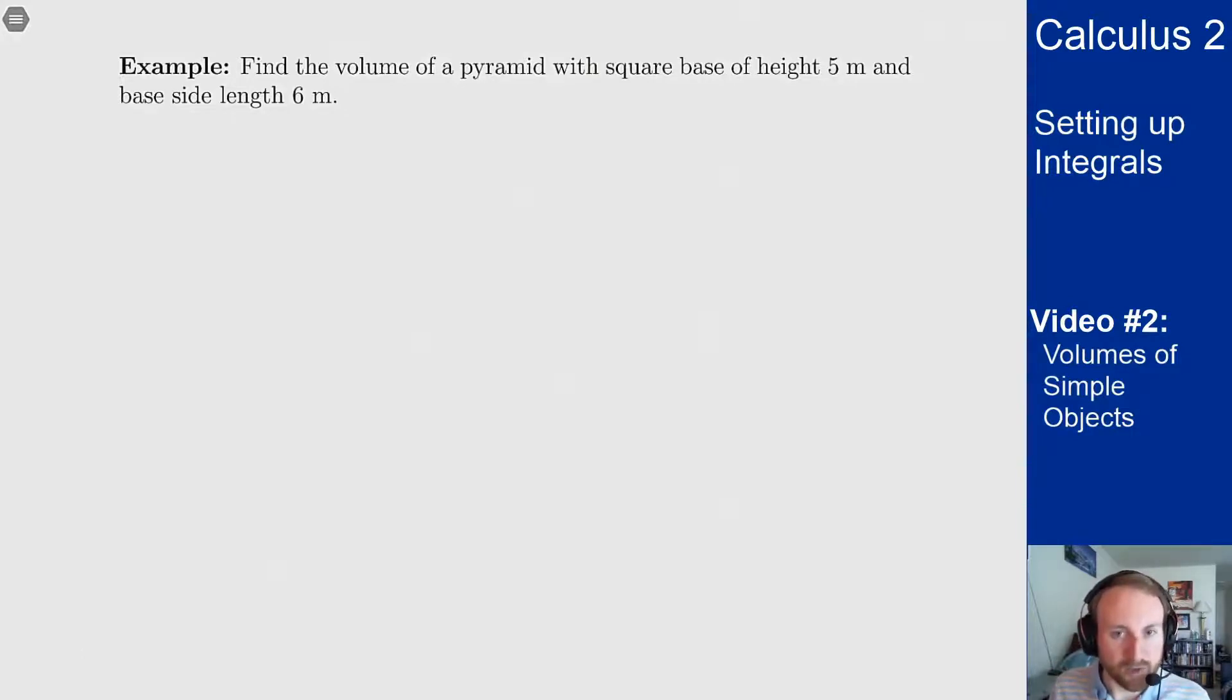Find the volume of a pyramid with square base of height 5 meters and base length 6 meters. So you probably know a formula for this already, but we will get to the answer at the end and then check with the formula that we have from basic geometry for how you find this volume.